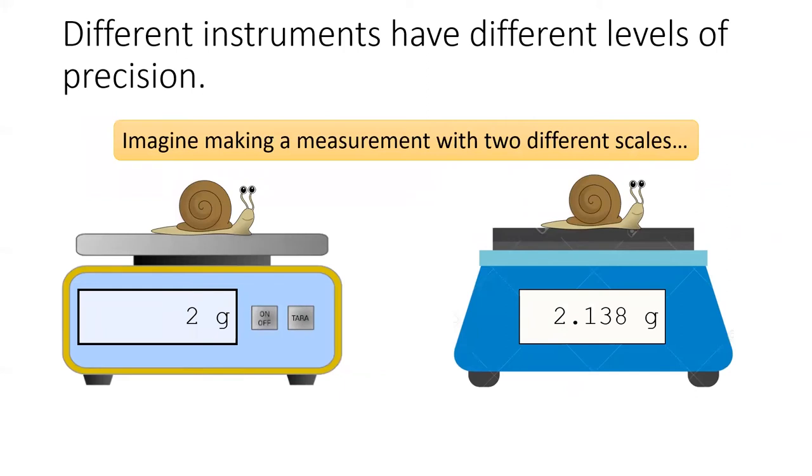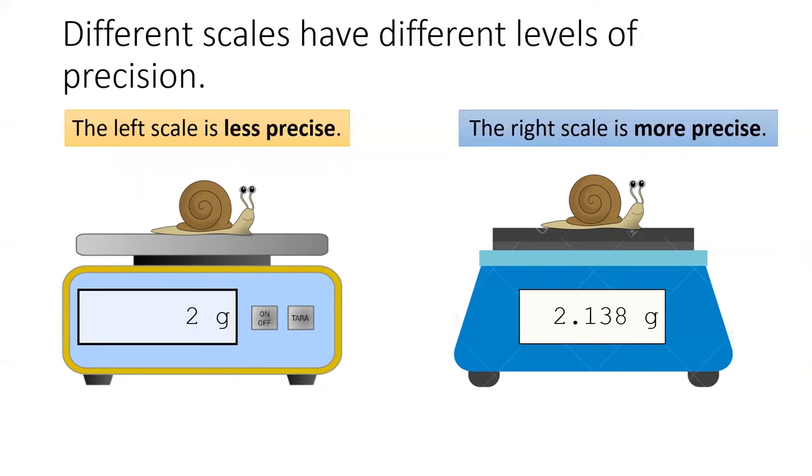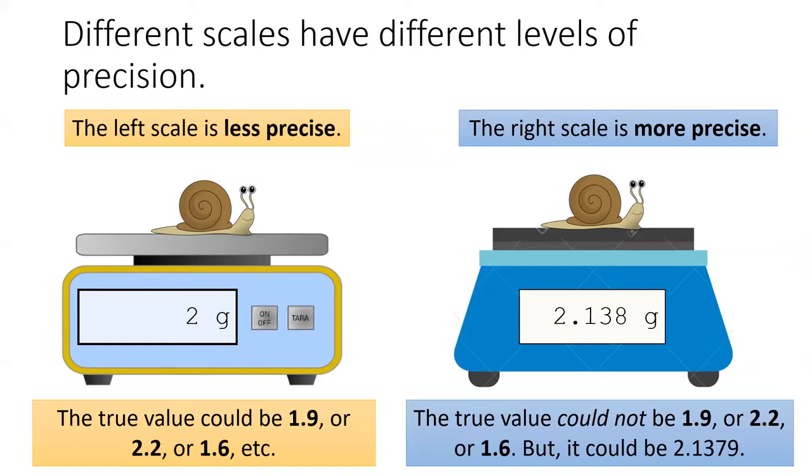Different scientific instruments have different levels of precision. Let's imagine you're trying to measure this cute little snail on two different scales. Which scale do you think is more precise? The answer is that the right scale is more precise than the left scale. Going off of only the information on the left scale, the true value could be anywhere between 1.5 grams and 2.4 grams. However, looking at the right scale, we know the true value can't be 1.5 grams or 2.4 grams. We still don't know the exact value, and we never will, but we can be more confident that we're getting closer.